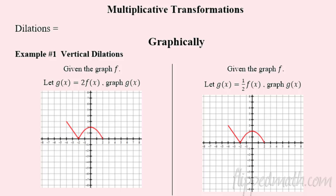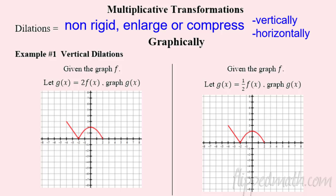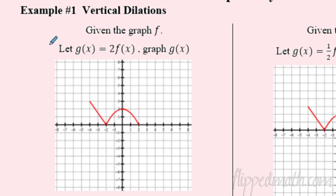Welcome to part two of our two-part series on transformations. Last time we did additive transformations; this time we're going to do multiplicative ones, which are called dilations. Last time we were doing translations — sliding things up, down, left, right. Now we're going to dilate, which means to enlarge or compress. These are non-rigid transformations, meaning the image is not going to be congruent to the pre-image.